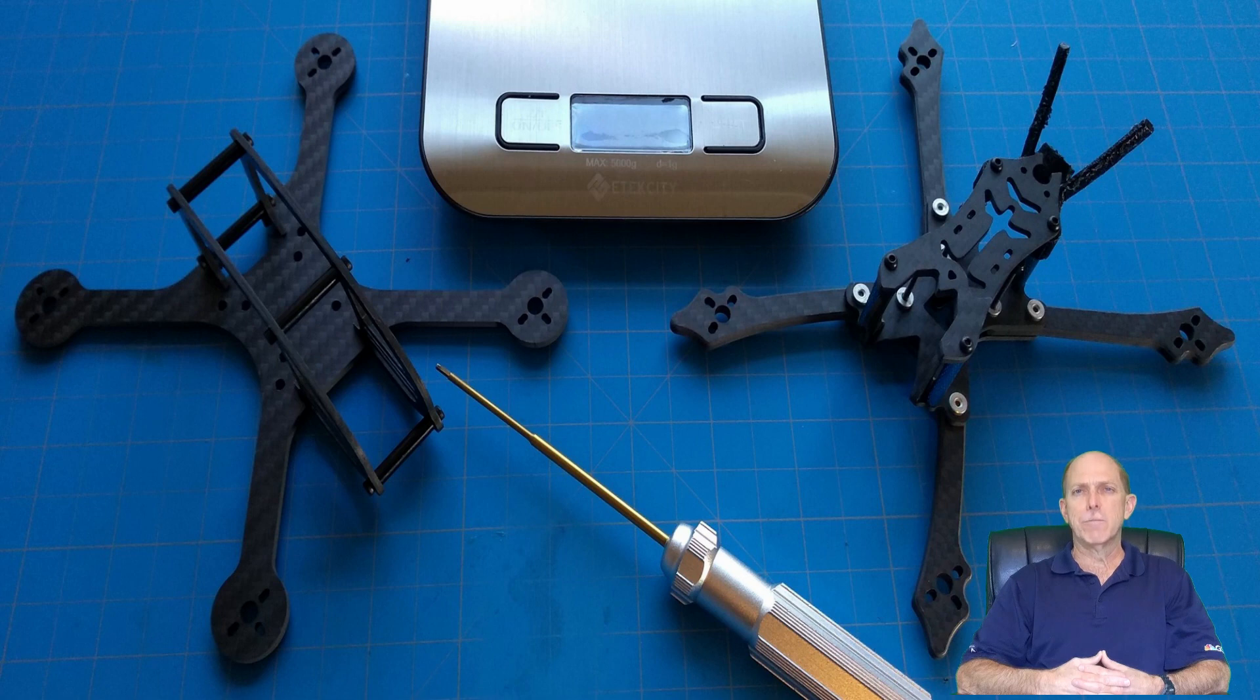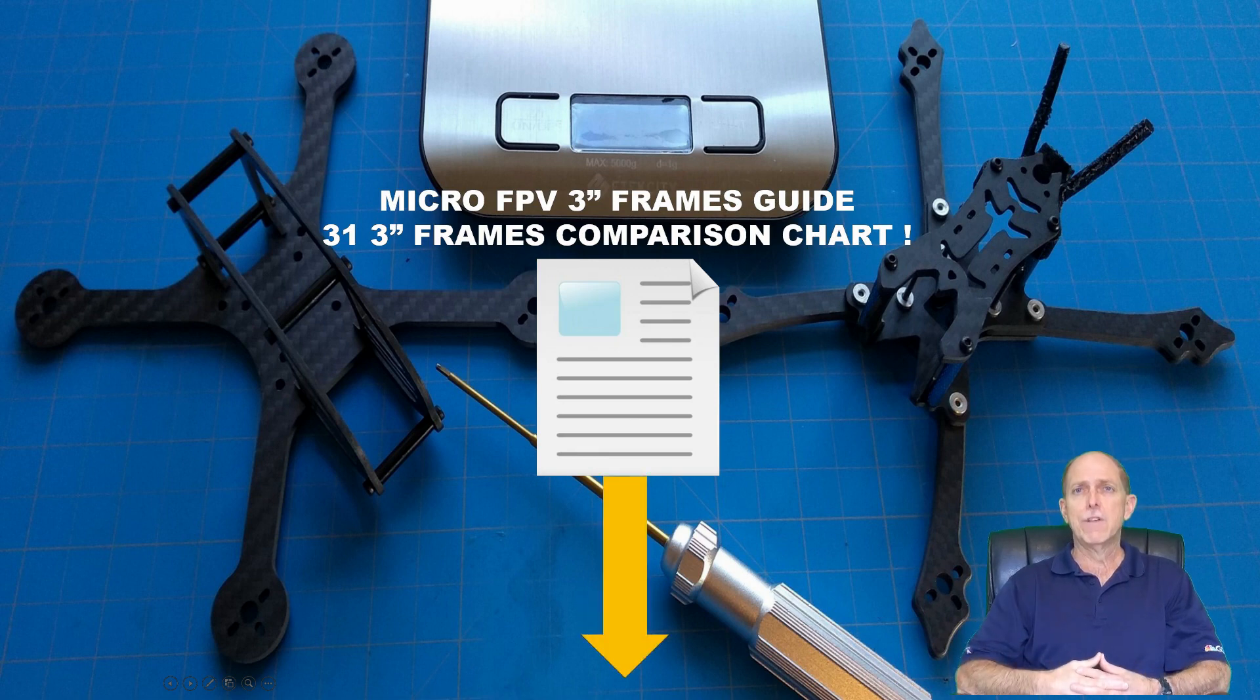Today we're going to be looking at some of the most important things to consider when choosing a frame for your 3-inch micro build by looking at those important things on two different frames and comparing them one to another. So by the end of this video you'll have a good understanding of what to look for in an FPV frame and we've put together a little guide which you can grab in the video description below of those important things so you don't have to remember them.